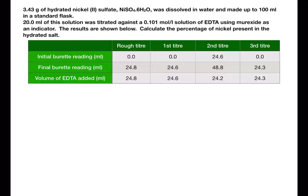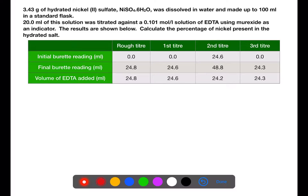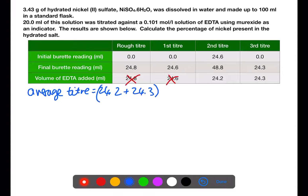In general you work backwards in these questions from the last piece of information that you have back to the very beginning. So our first step is to work out the average titer. We need to use only our concordant titers, so the titers that we are ignoring are the first two. We're going to calculate our average titer using 24.2 and 24.3, which gives us an average titer of 24.25 ml.